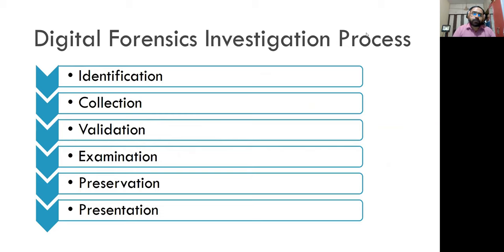The digital forensics investigation process has six steps: identification, collection, validation, examination, preservation, and finalizing the presentation. In the identification step, the investigation officer visits the crime location and identifies different devices to be seized, which may include mobile phones, laptops, computers, various gadgets, hard disks, network cables, and USB pen drives.